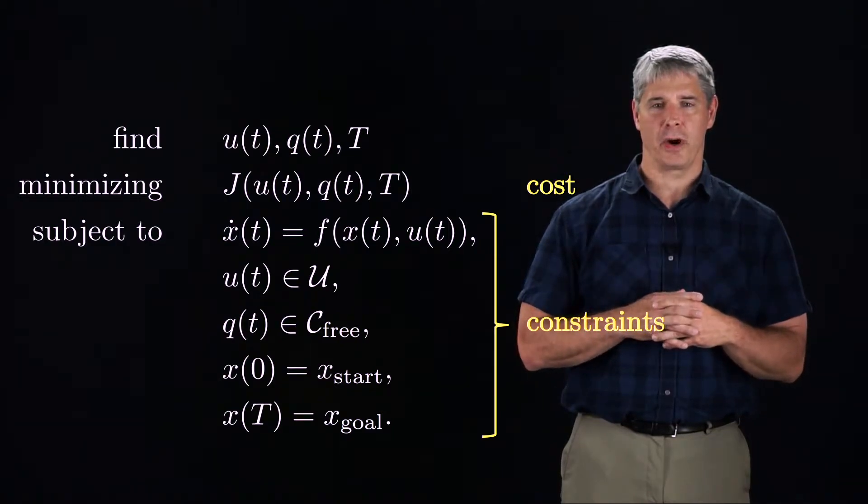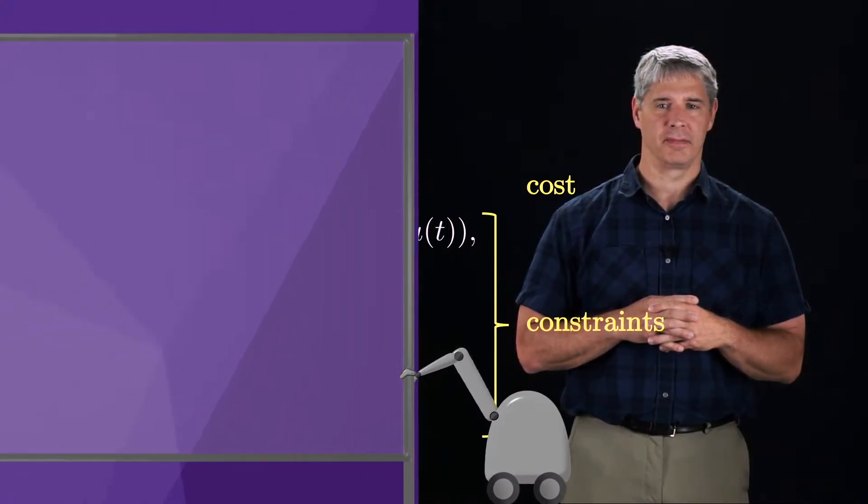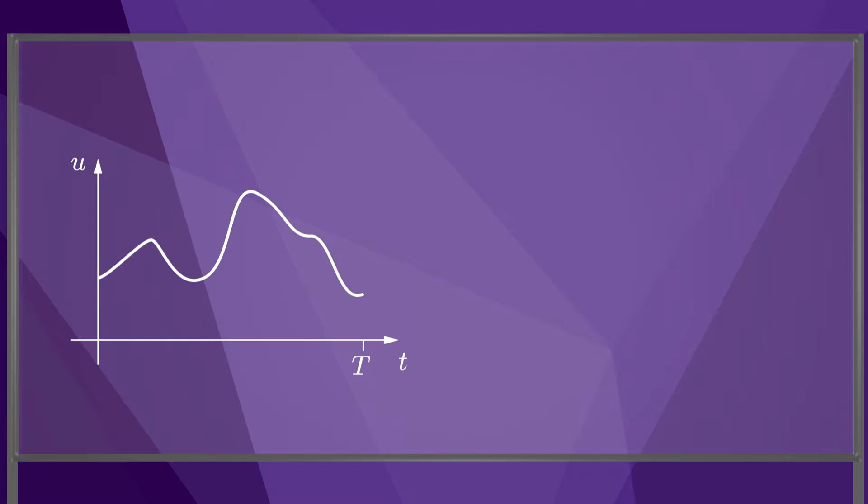Nonlinear optimization requires an initial guess at the solution. Let's say this control history is our initial guess. To turn the motion planning problem into a nonlinear optimization, we need a finite parameter representation of the control. There are many ways to do this. We could use a set of knot points interpolated by polynomials or splines, or piecewise constant controls, or piecewise linear controls.